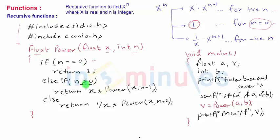Else if n is positive that is n is greater than 0 then return x into power of x raise to n minus 1. So the last part is else return 1 upon x into power of x comma n plus 1 that is x raise to n plus 1.